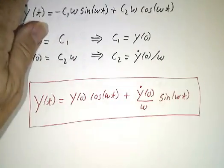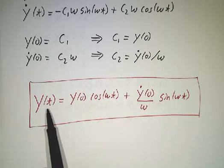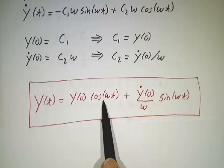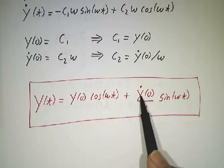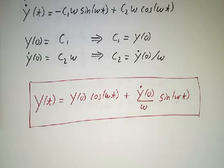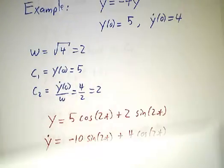Plug it back into our general form and there you go. Our general solution is y of t equals the initial value times the cosine plus the initial derivative divided by omega times the sine. And that really wraps up the whole case. So let's see how that works in our example.